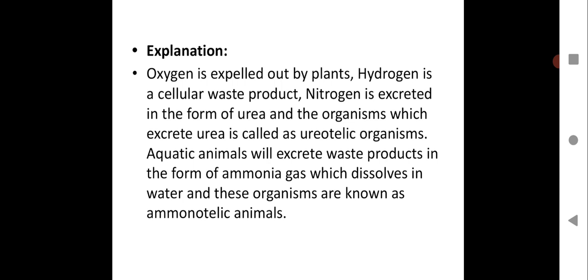Explanation: Oxygen is expelled out by plants, hydrogen is a cellular waste product, nitrogen is excreted in the form of urea and the organisms which excrete urea are called urolytic organisms. Aquatic animals will excrete waste products in the form of ammonia, that is ammonia gas which gets dissolved in water, and these organisms are known as ammonotelic animals, whereas the animals which give out urea they are called urolytic organisms.